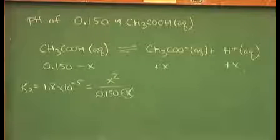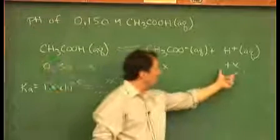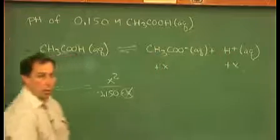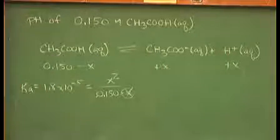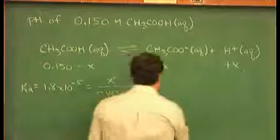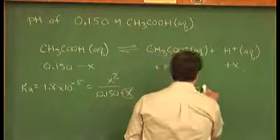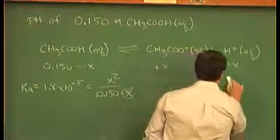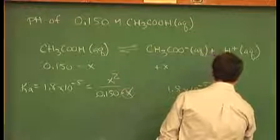The reason we're going to solve for X is because X gives us the concentration of H plus, which is what we're after, we can get at the pH that way. So my problem reduces to 1.8 times 10 to the negative fifth is equal to X squared over 0.150.